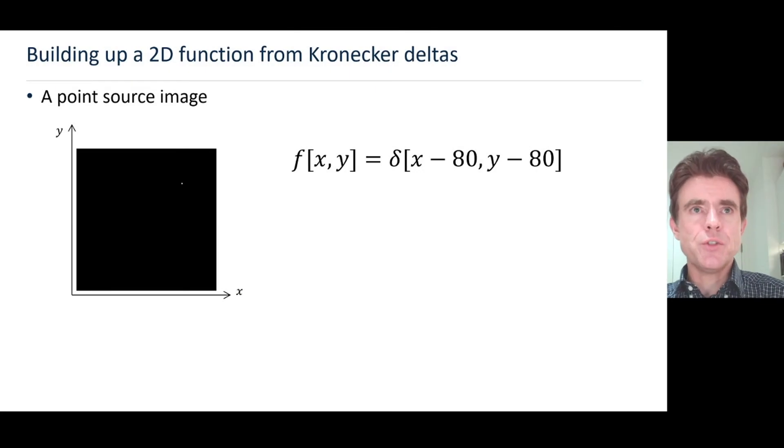So here it is in explicit terms for a 2D function. This is kind of like used in a simulation of a PET scanner. Here I've got a 2D image, zero is black here, and I've just got this point source here.